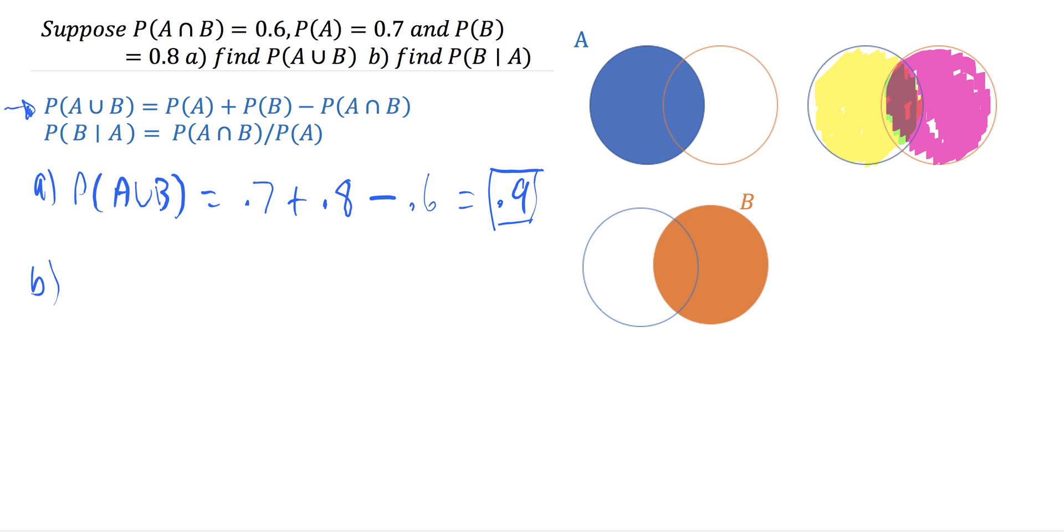And likewise for part B, we've got the probability of B given A equals the probability of the intersection, which is 0.6, over the probability of A, which is 0.7, which equals 6 sevenths, or approximately 0.86. So those are our answers for those two.